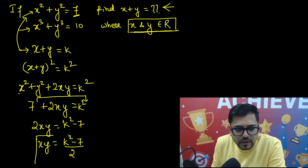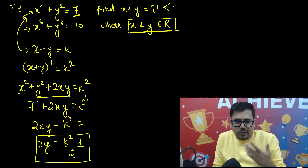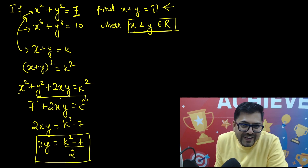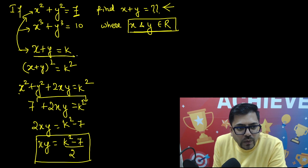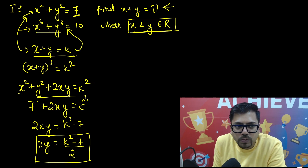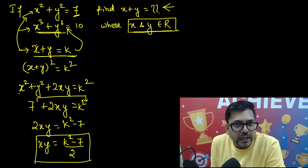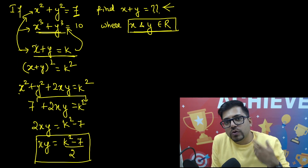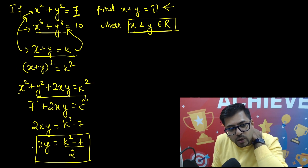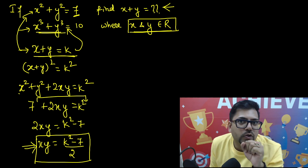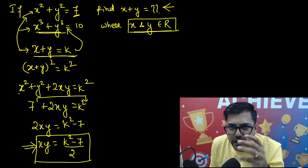Now you might be thinking, why did we find the value of xy? Actually, I know that I have to also reach the cube equation. For getting into the cube, I will need to cube both sides, and there I will require the value of xy. That's why I found the value of xy.